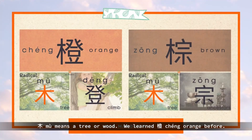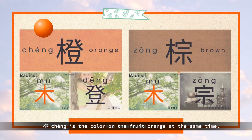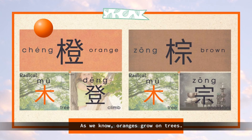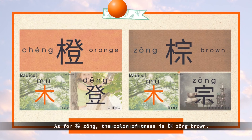Mu means a tree or wood. We learned 橙 — orange — before. 橙 is both the color and the fruit orange at the same time. As we know, oranges grow on trees. As for 棕, the color of trees is 棕 — brown.